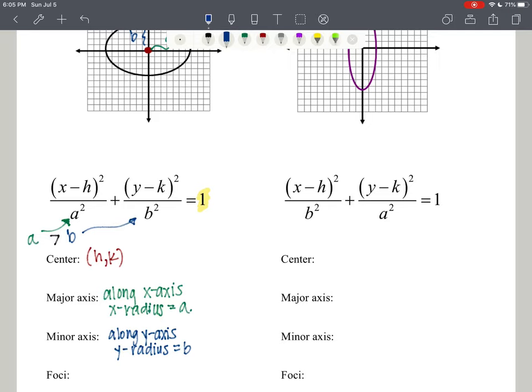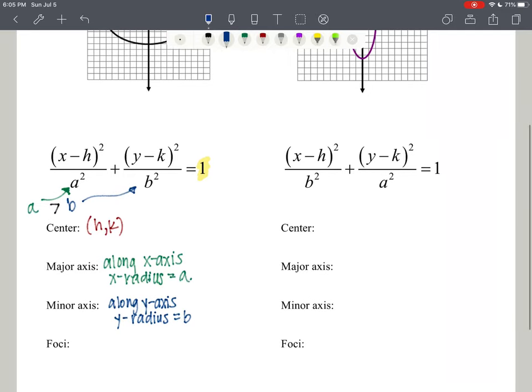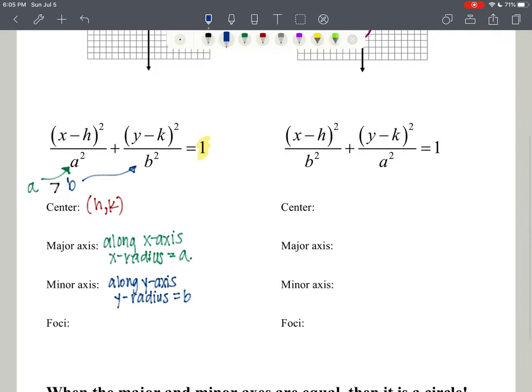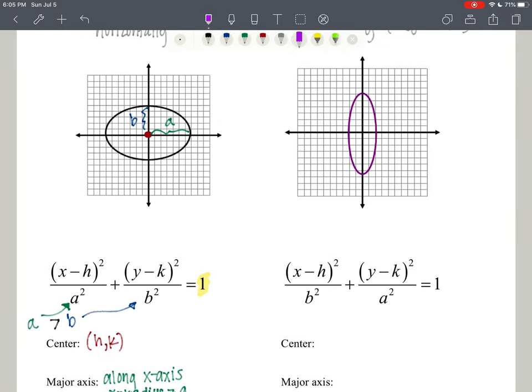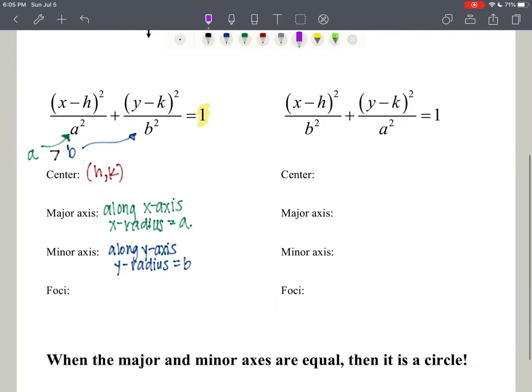In this case, a is going to be greater than b. The foci—there's going to be two foci—and the foci are going to always be along the major axis.